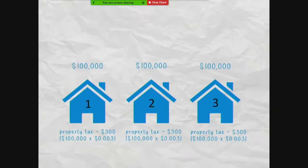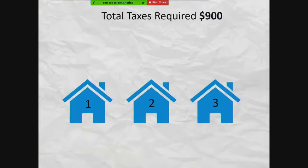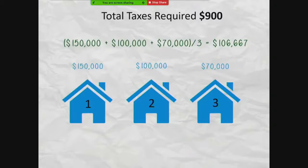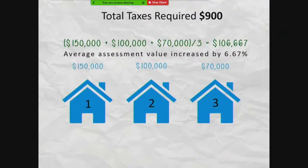This looks simple, but let's see what happens the following year when assessed values change but the total combined taxing district's budget stays the same at $900. House number one is now assessed at $150,000, house number two at $100,000, and house number three at $70,000. The overall average assessment value increased to $106,667, or 6.67%. Because of this change, a new tax rate must be calculated: $900 divided by the combined assessed value of all three properties, equaling $0.0028125.